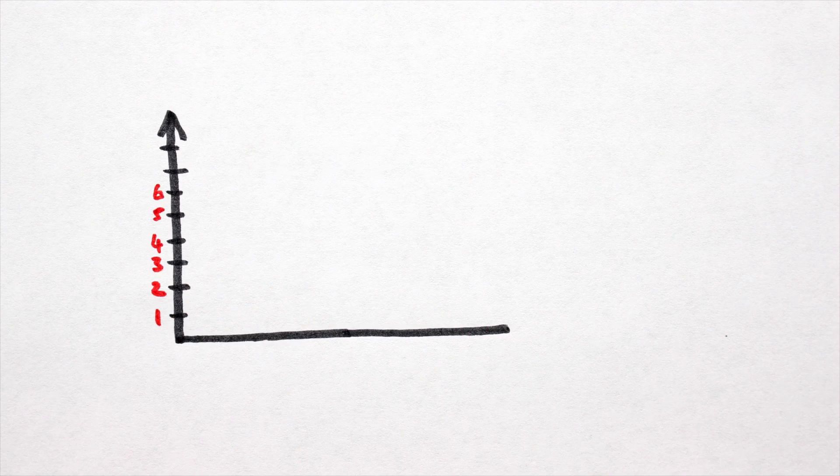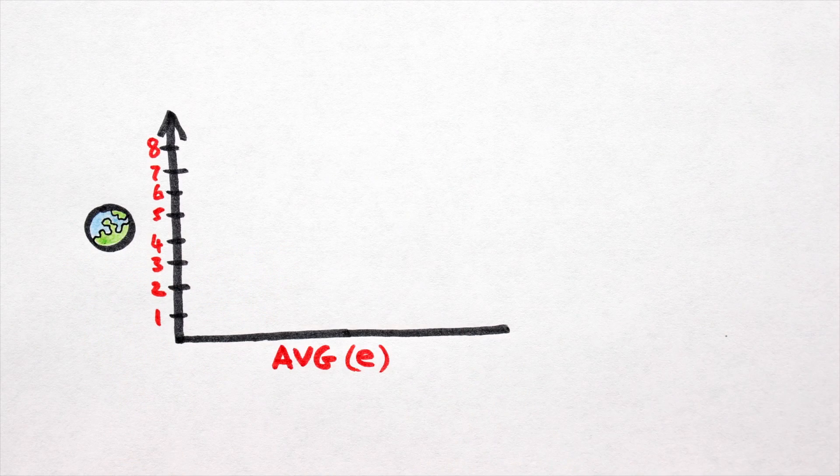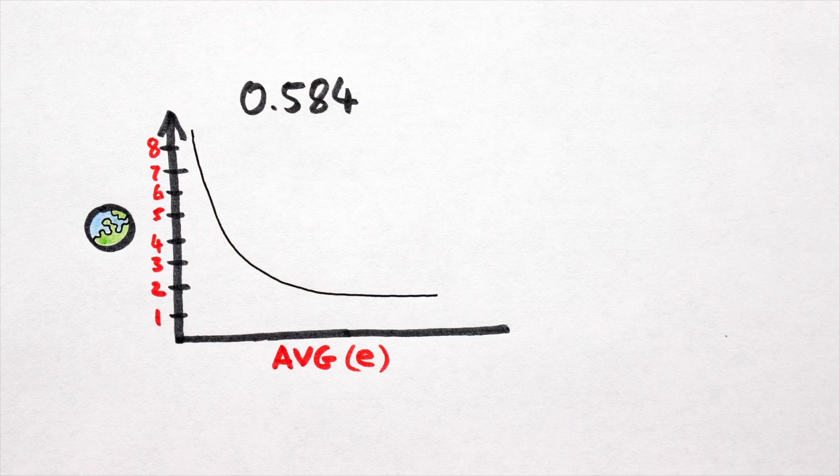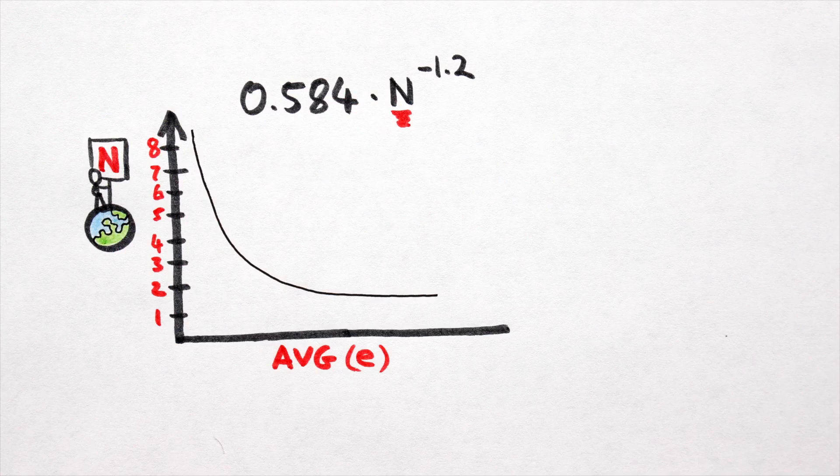As an interesting aside, there is some data to suggest that the more planets there are in a system, the less the average eccentricity of those planets will be. This relationship is governed by 0.584 times n to the power of negative 1.2, where n is the number of planets in a system.